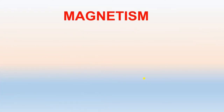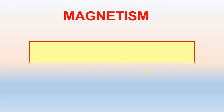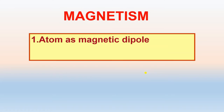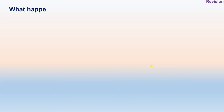Now, come to today's topic — that is magnetism. In magnetism, we will discuss the atom as a magnetic dipole, and along with that, we will discuss the magnetic field. Before discussing today's topic, let us revise the previous topic from the previous lecture.